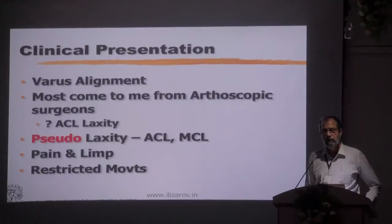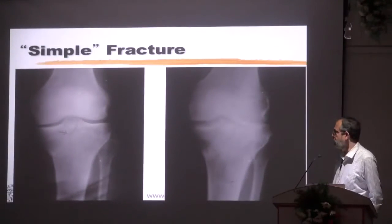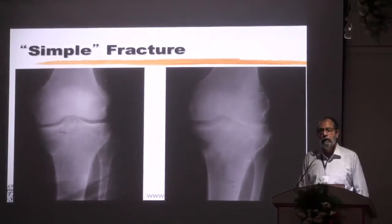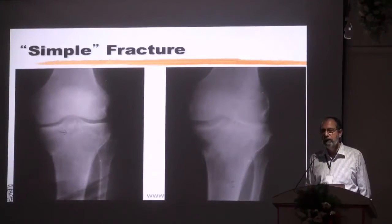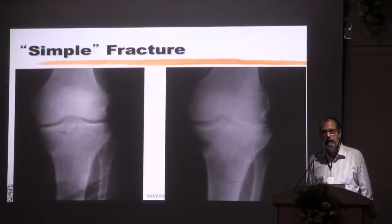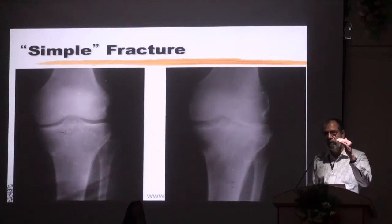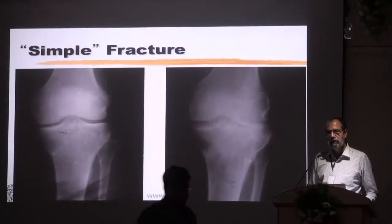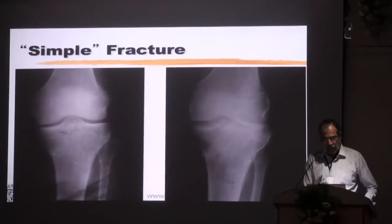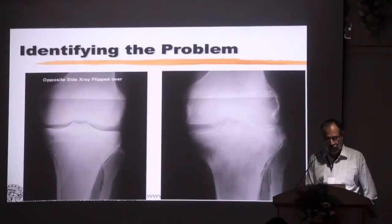All of us have seen grossly disturbed articular surfaces, but they still have a very good range of motion. This is a relatively simple fracture which sometimes you may be wondering whether you should fix it or not, because it seems like an undisplaced fracture. But these fractures will almost always displace and will go down a little, as you see on the right side, leading to a significant enough clinical problem.